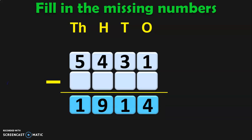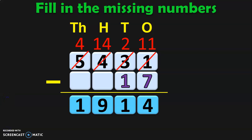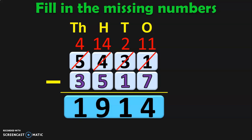Let us do one more exercise where the second number is completely vacant. From the ones place: 1 minus something gives 4, so borrow from the tens place making it 11. 11 minus 7 is 4. Tens place: 2 minus dash is 1, so 2 minus 1 is 1. Hundreds place: 4 minus dash is 9, so regroup to get 14 minus 5 is 9. Thousands place: 4 minus dash is 1, so 4 minus 3 is 1. Therefore, 5,431 minus 3,517 is 1,914.